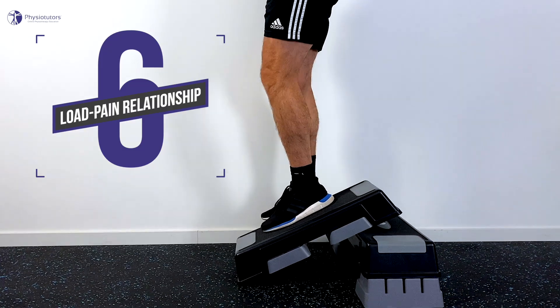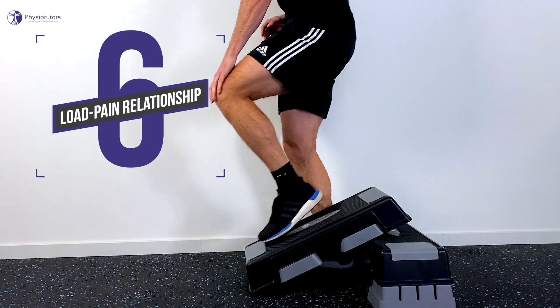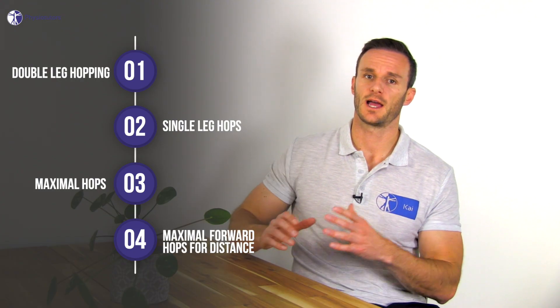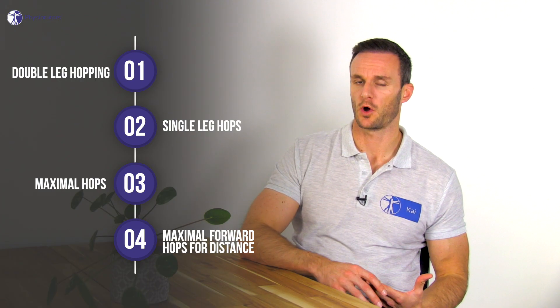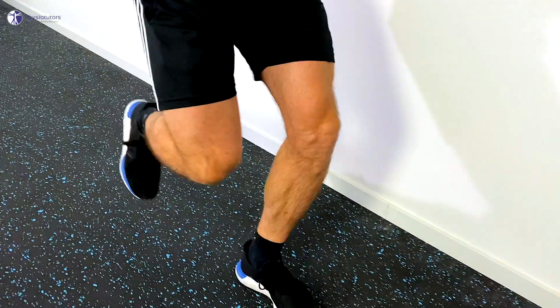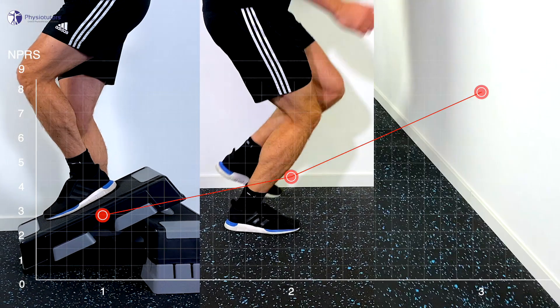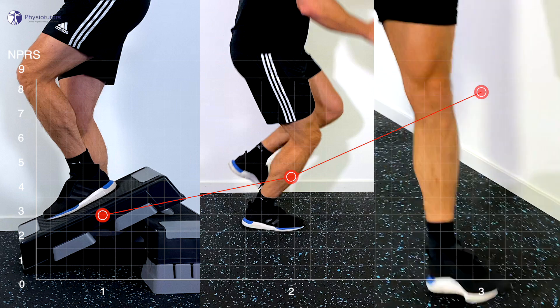Number six: proportional load-pain relationship. Like with every tendinopathy, you are looking for an increase in pain with an increase in load on the patellar tendon. A good starting provocation test is decline squats, in which very load-intolerant patients report pain from as early as 30 degrees of flexion. Then continue with double leg hopping, single leg hops, maximal hops, and maximal forward hops for distance. A very intense test is to ask the patient to come to a sudden stop on one leg after jogging or running, as if they were to change directions. Pain levels have to increase with increasing difficulty — so if the decline squat was scored 3 out of 10, single leg hopping should be higher, with the highest scores at maximal hopping or a sudden stop from running.